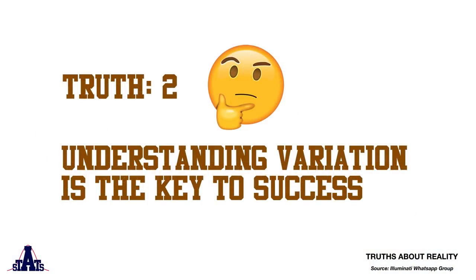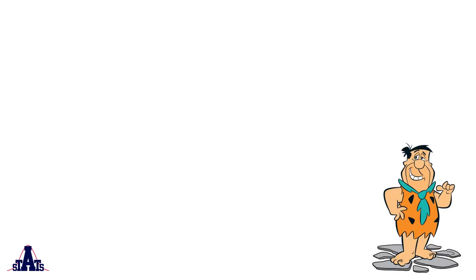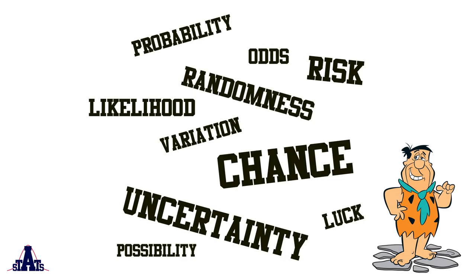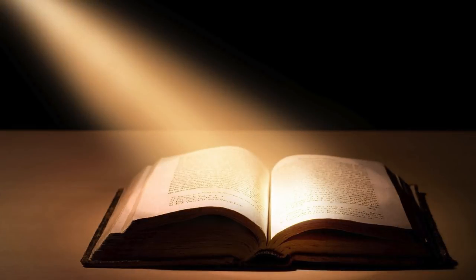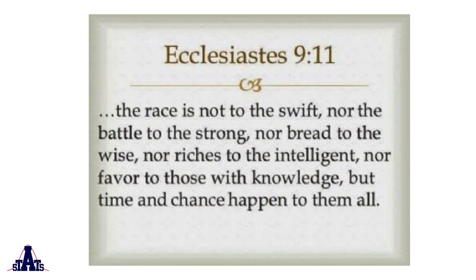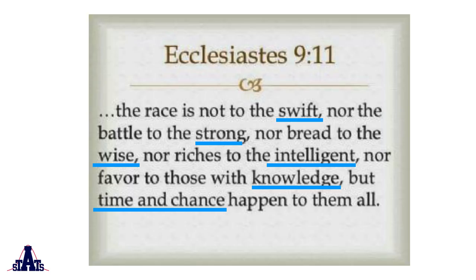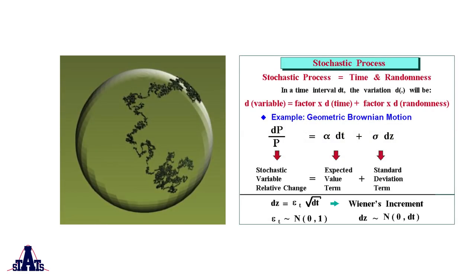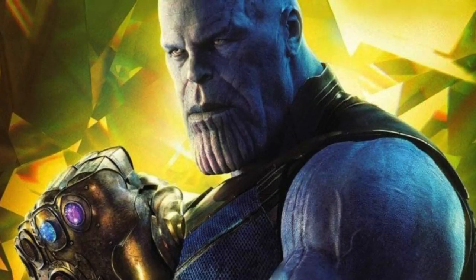Now these truths we looked at — we've actually known them for a long time. Since the dawn of time, cavemen have known these truths. Where it gets confusing is the many different words we use to describe this randomness. Even the Holy Bible has verses like: 'The race is not to the swift, nor the battle to the strong, nor bread to the wise, nor riches to the intelligent, nor favor to those with knowledge, but time and chance happen to them all.' It's interesting that the Bible talks about time and chance, because when you combine those two things you get something called the stochastic process — very advanced but very powerful. You can control the universe if you know stochastic processes.